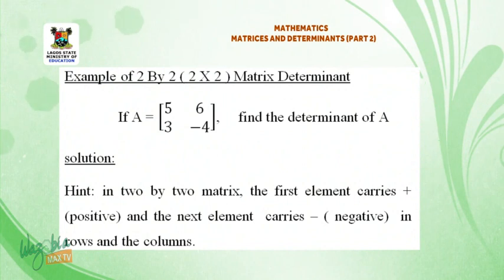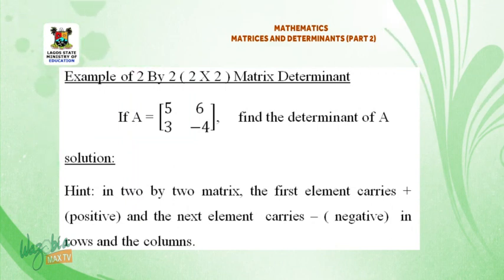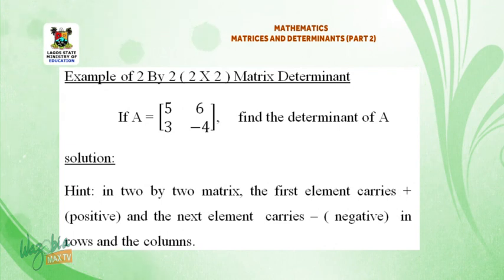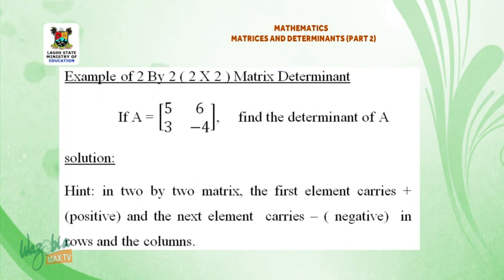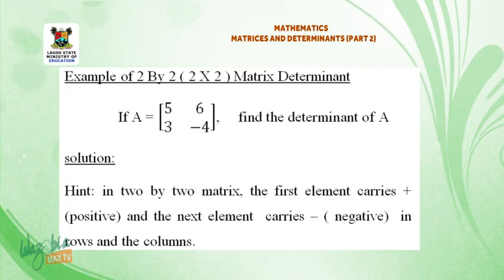Example of a 2×2 matrix determinant. If A is equal to the matrix: 5, 6, 3, minus 4 — find the determinant of A. Solution. In a 2×2 matrix, the first element carries positive and negative in rows and columns.